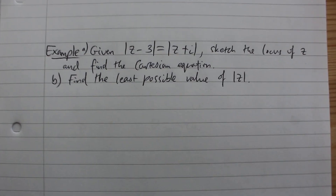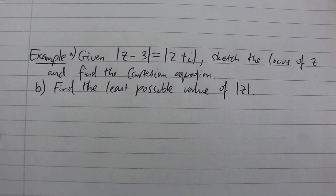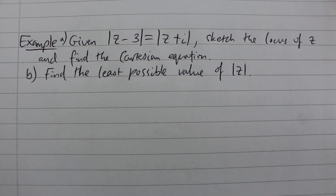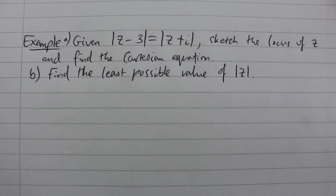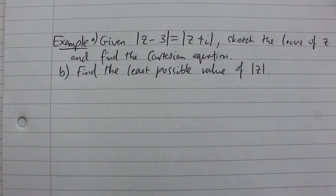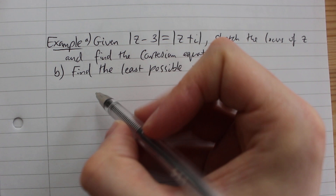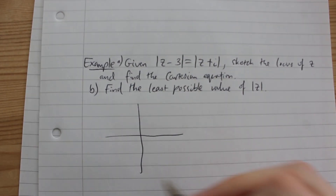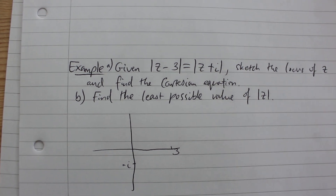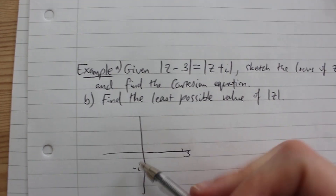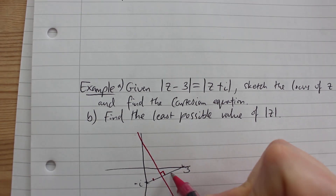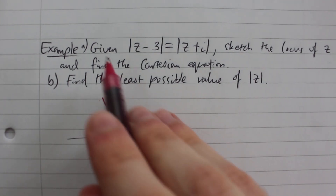For the next example: given the modulus of z minus 3 equals the modulus of z plus i, sketch the locus of z and find the Cartesian equation. This is of the form modulus of z minus a equals modulus of z minus b, so it's a perpendicular bisector. It's the set of points z equidistant from 3 and minus i. Plotting minus i and 3, the locus is the perpendicular bisector of the segment joining them.